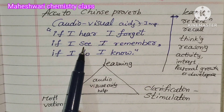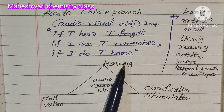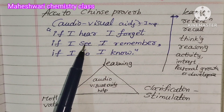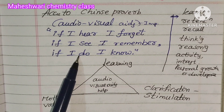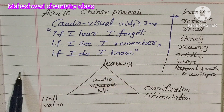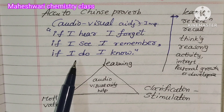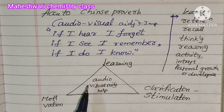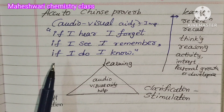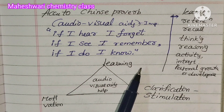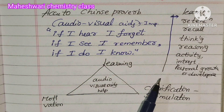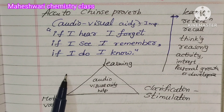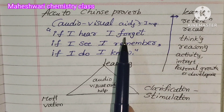There is a famous Chinese proverb by Confucius: 'If I hear, I forget. If I see, I remember. If I do, I know.' What I do, I understand. What I see, I remember.